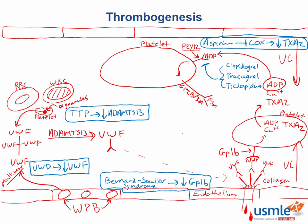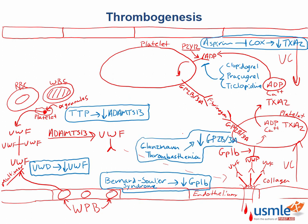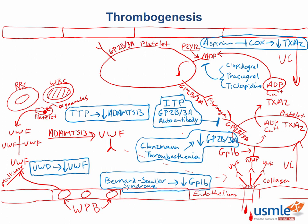So now we have our glycoprotein 2B3A receptor on the surface of platelets. It will bind to fibrinogen, which will also bind to other glycoprotein 2B3A receptors on other platelets, cross-linking them. A defect in glycoprotein 2B3A would cause Glanzmann's thrombasthenia. And if we were to form autoantibodies to our glycoprotein 2B3A receptor, that would be ITP. Drugs that inhibit the glycoprotein 2B3A receptor include abciximab, eptifibatide, and tirofiban.